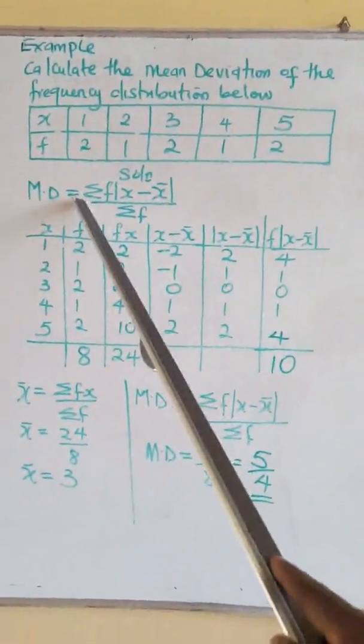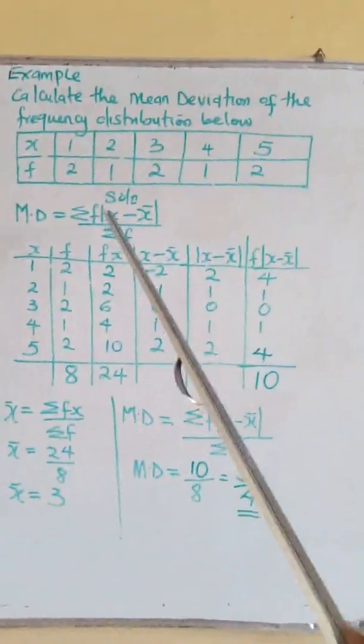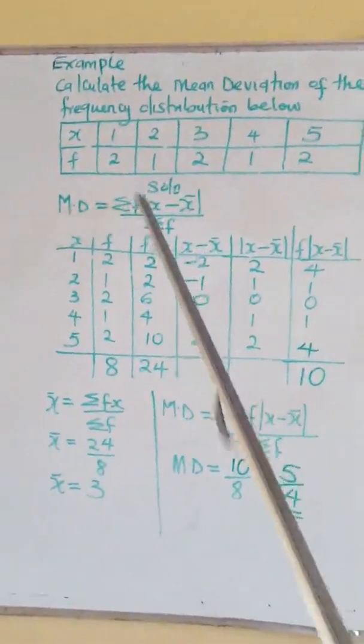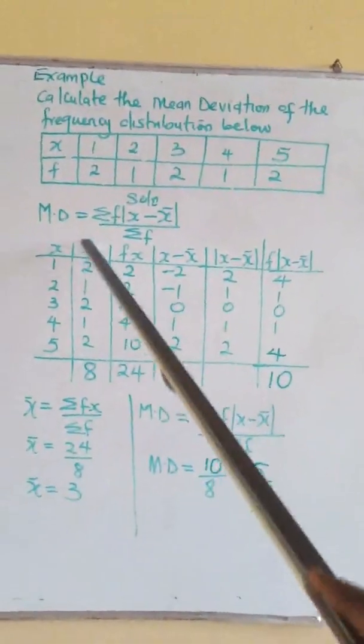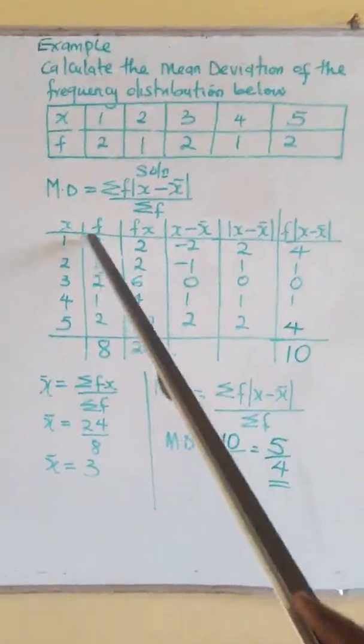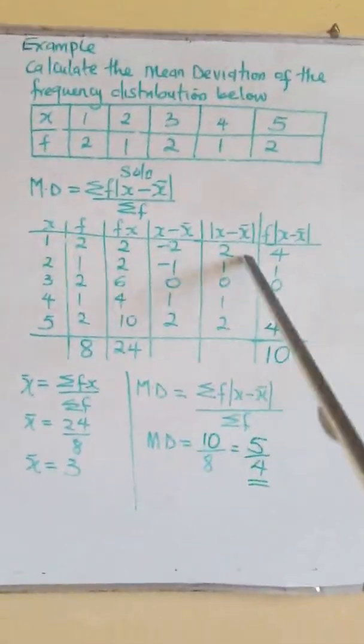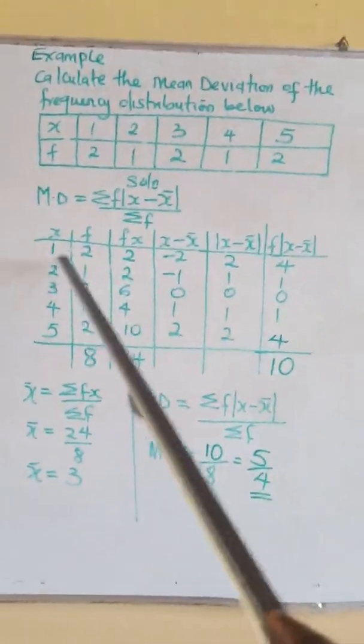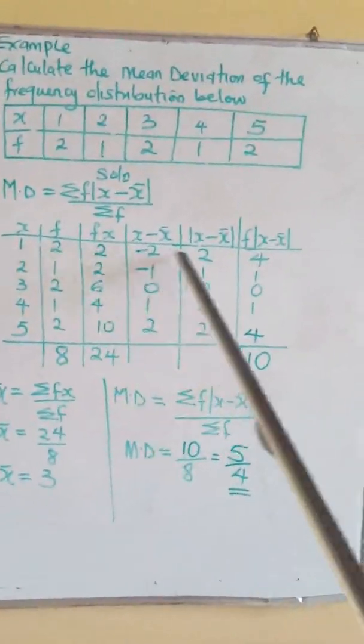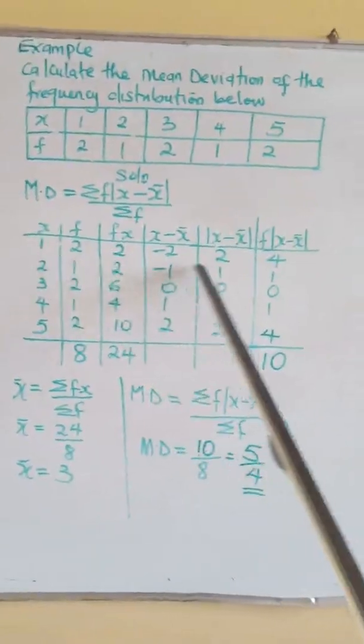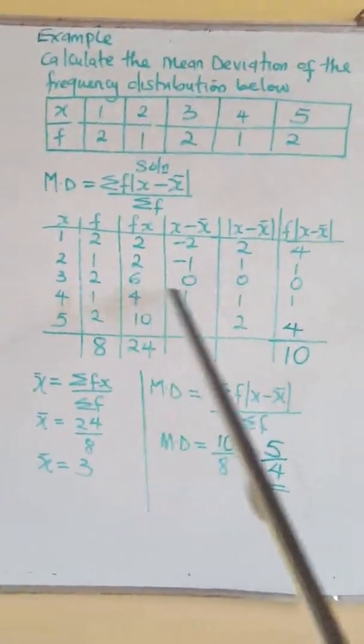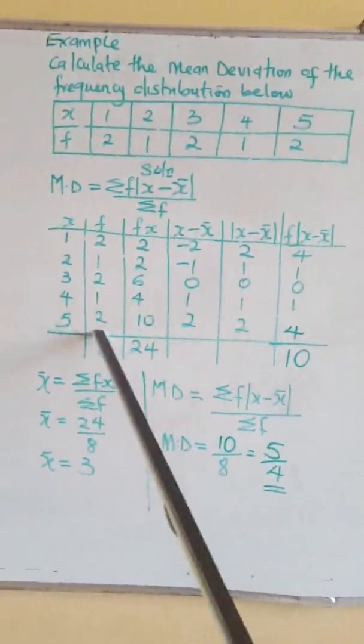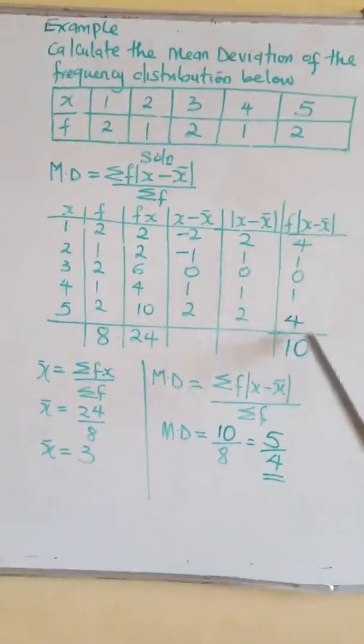Now what is the next thing in the formula? Absolute value multiplied by f, then find the summation. So go to the column of absolute value and the column of f, multiply the individual elements in a row: 2 multiplied by 2 is 4, 1 times 1 is 1, 2 times 0 is 0, 1 times 1 is 1, 2 times 2 is 4. Sum it up to give you 10.